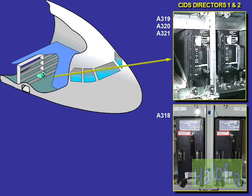The main components of the CIDS are the directors. Director 1 is active and director 2 is in hot standby in normal operation. On the A318, the directors are new. They integrate the vacuum system control function and the smoke detection function.